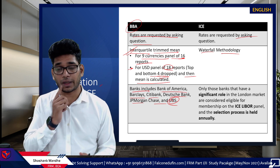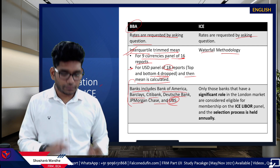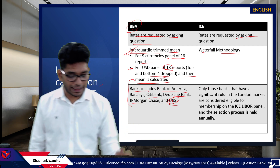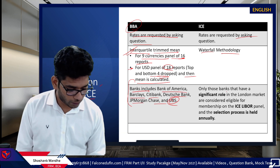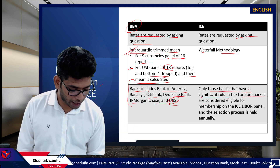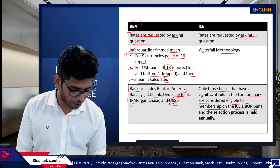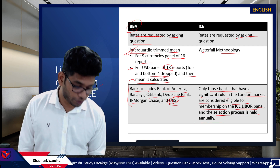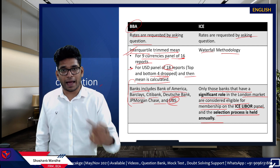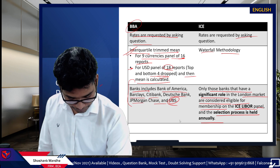UBS, Barclays, and other banks were the culprits involved in LIBOR manipulation. In the BBA the panel was fixed, but a significant change under ICE is that only banks with a significant role in the London market are eligible for membership on the ICE LIBOR panel, and the selection process is held annually — meaning there are no fixed banks, they change on a year-on-year basis.